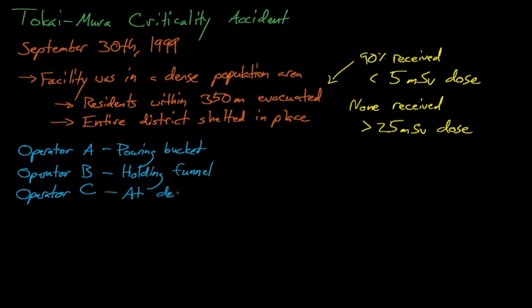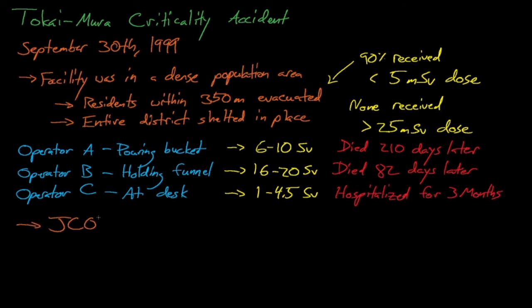Following the accident, JCO lost their operating license for the facility and the chief executives received some fines and some jail time. JCO also met with several lawsuits and eventually the company filed for bankruptcy. The factors that led to this accident include a weak understanding of criticality safety by employees at all levels, company pressures to operate more efficiently, and the mindset within JCO that an accident was not credible.